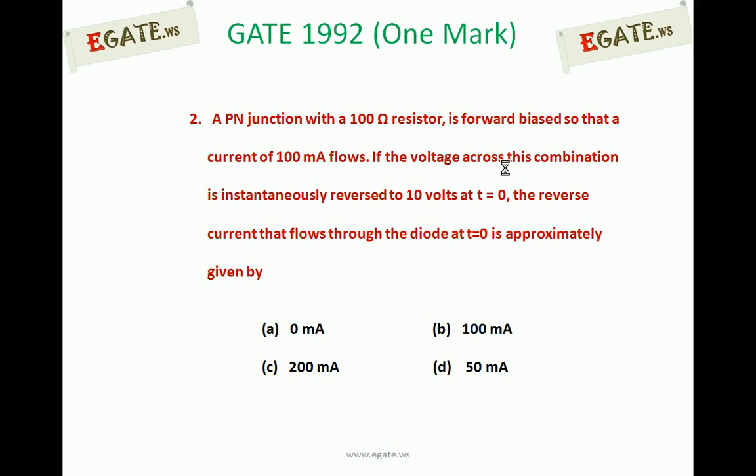Given: a PN junction with a 100 ohm resistor is forward biased such that a current of 100 mA flows. At T equal to 0, the voltage across this combination is instantaneously reversed to 10V. We need to calculate, at T equal to 0, what is the reverse current flowing through the diode.